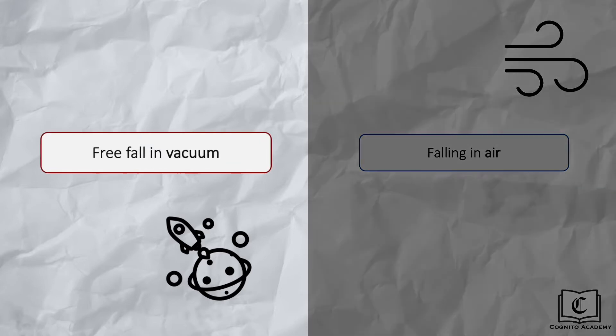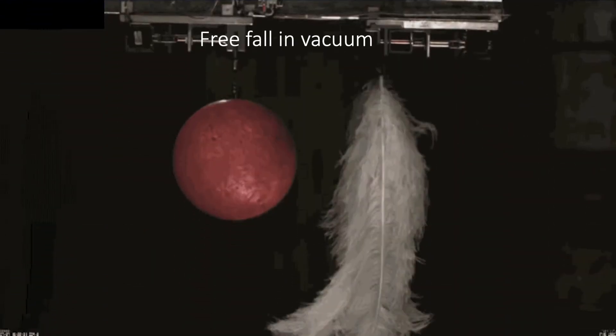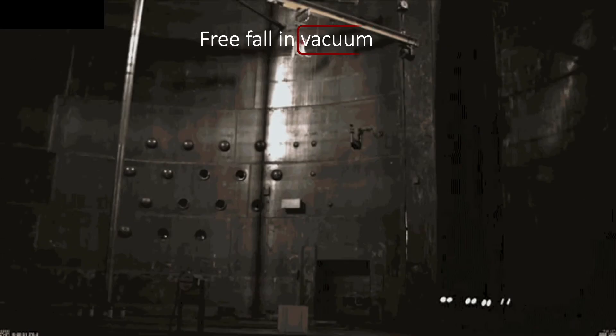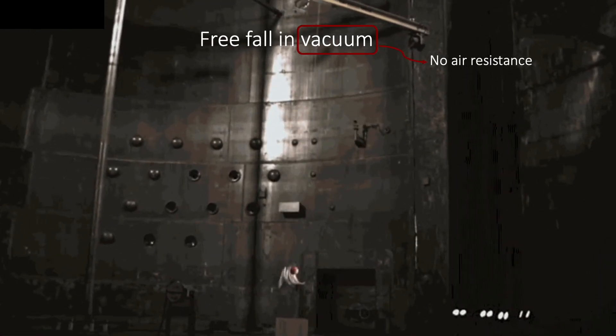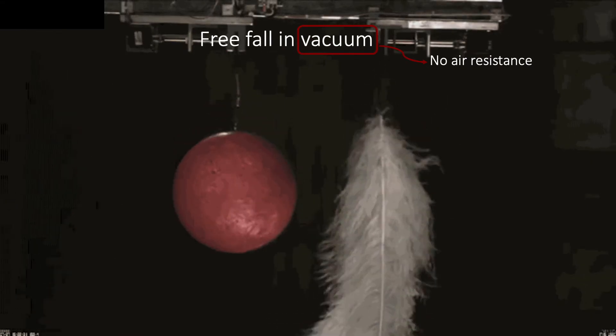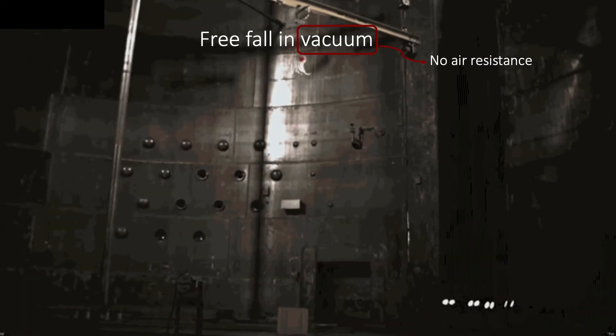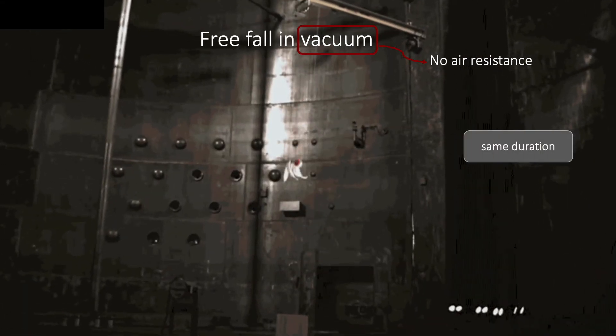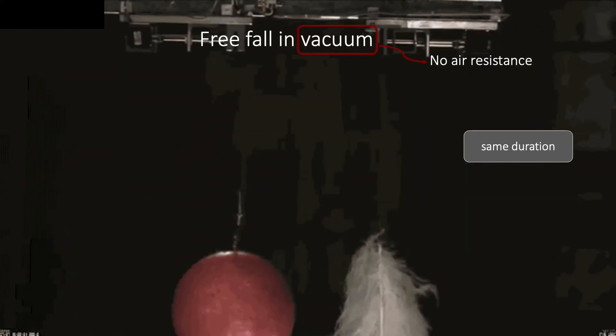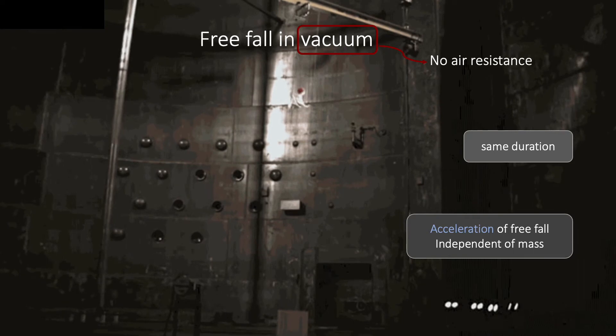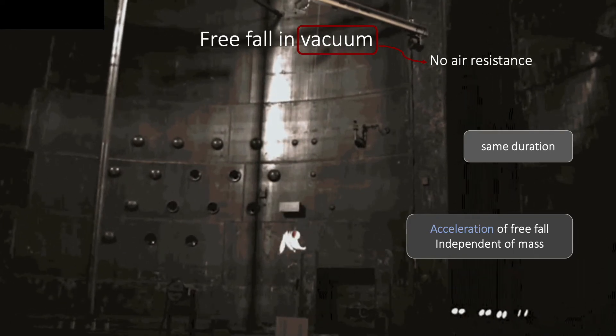Let's first look at free fall in vacuum. Free fall in vacuum means no air resistance is involved. In this clip, we see a bowling ball and a feather being released in vacuum, and we observe that they take the same duration to fall the same height, even though the bowling ball is heavier. This is because acceleration of free fall in vacuum is independent of mass. Let's investigate why.